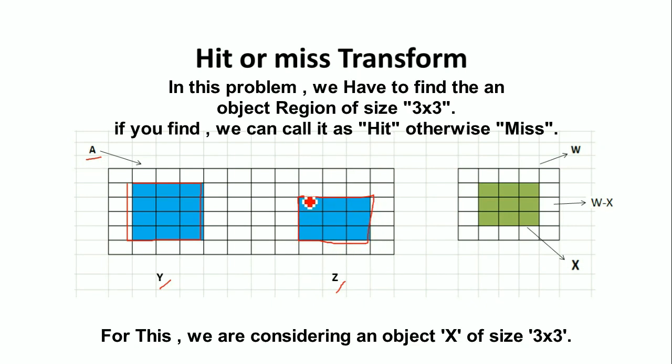Within this image A, we have to find whether there is a 3 by 3 size object region present or not. For this, we use the Hit or Miss Transform. If the 3 by 3 size region is present within image A, then we call it a Hit. If the 3 by 3 region is not there, then we call it a Miss.